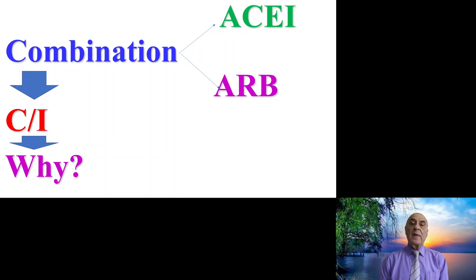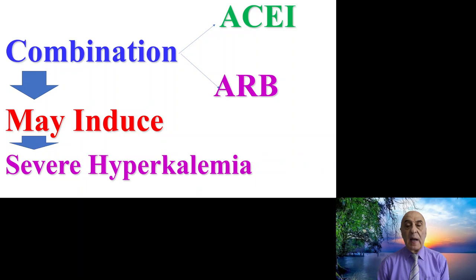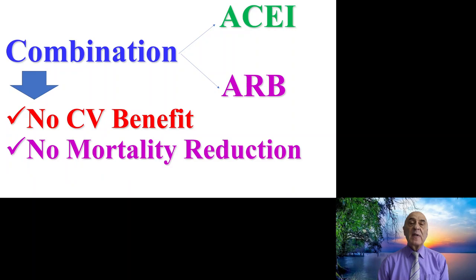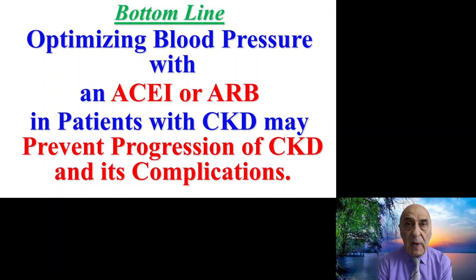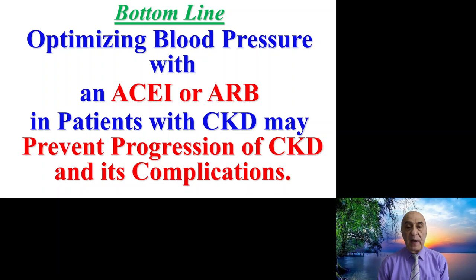The combination of an angiotensin converting enzyme inhibitor with an angiotensin receptor blocker is contraindicated, because this combination may induce acute kidney injury, may cause severe hyperkalemia, provides no cardiovascular benefit, and does not reduce the mortality rate. In summary, optimizing blood pressure with an ACE inhibitor or angiotensin receptor blocker in patients with chronic kidney disease may prevent the progression of CKD and its complications. Thank you very much and have a wonderful day.